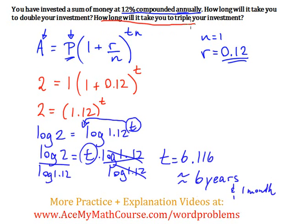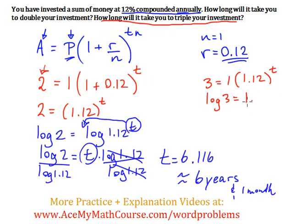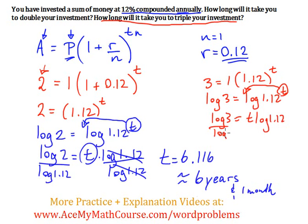How long will it take to triple your investment? The question looks exactly the same, but we replace the 2 with a 3. So 3 equals 1 times 1.12 to the power of T. Log both sides again: log 1.12 to the power of T, then bring down the T. So we have T times log 1.12 equals log 3. Divide both sides by log 1.12, so T equals log 3 over log 1.12. Plugging that into the calculator, we get 9.69 years.